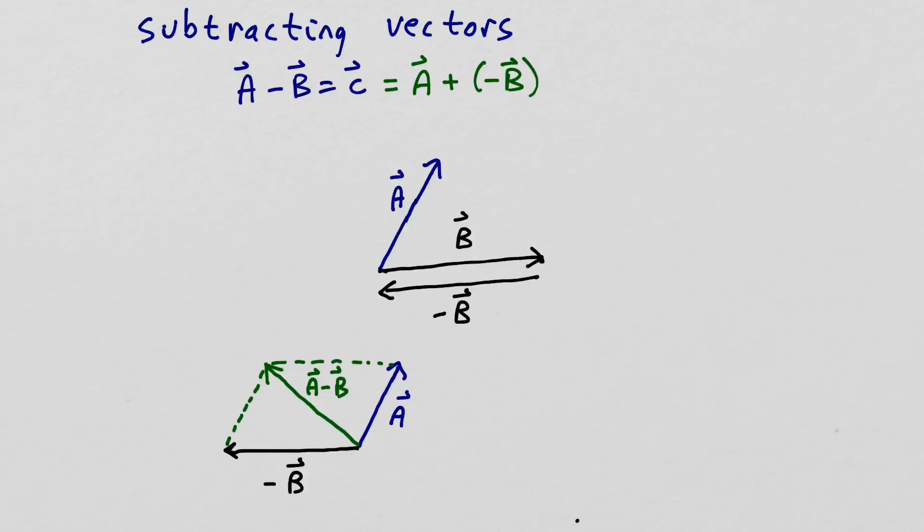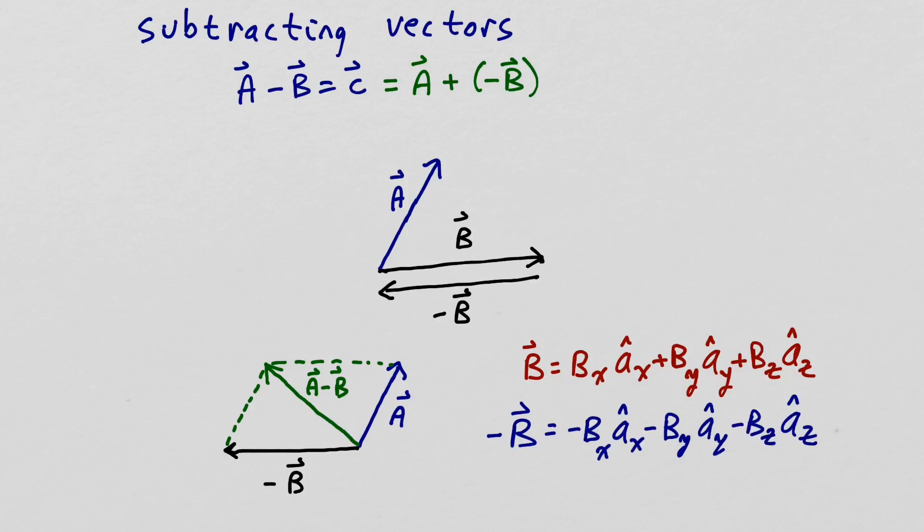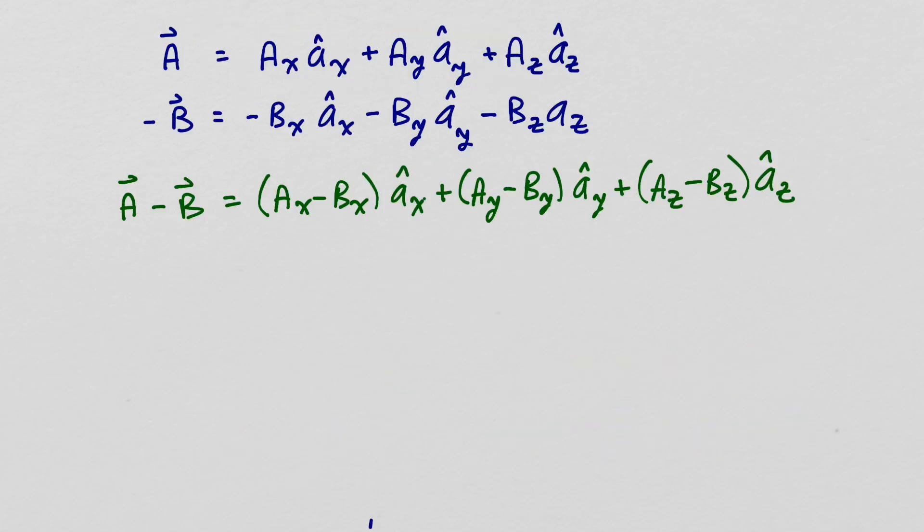Here we have B in component form. To get minus B, we just take the negative of this. So to form A minus B, we just add the components of A and minus B. So the x component of A minus B will be A sub X minus B sub X. The y component, A sub Y minus B sub Y. And the z component, A sub Z minus B sub Z.